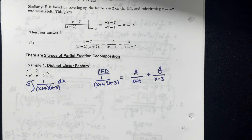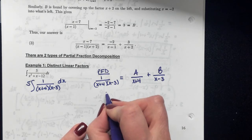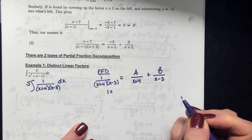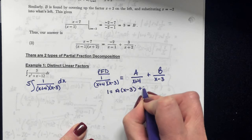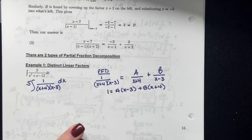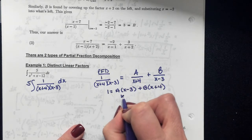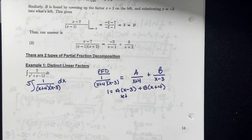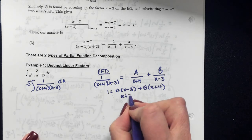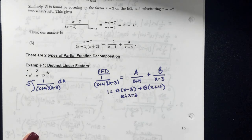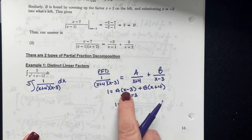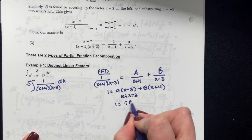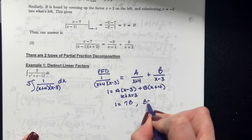You can use the Heaviside method, or like I showed you before, clear the fractions by multiplying everything by (x+4)(x−3). This gives me A(x−3) + B(x+4). Looking at the factor x−3, its zero is x=3. Plugging 3 in: 1 = A·(3−3) + B·(3+4), so the A term goes to 0 and I get 1 = 7B. Therefore B = 1/7.